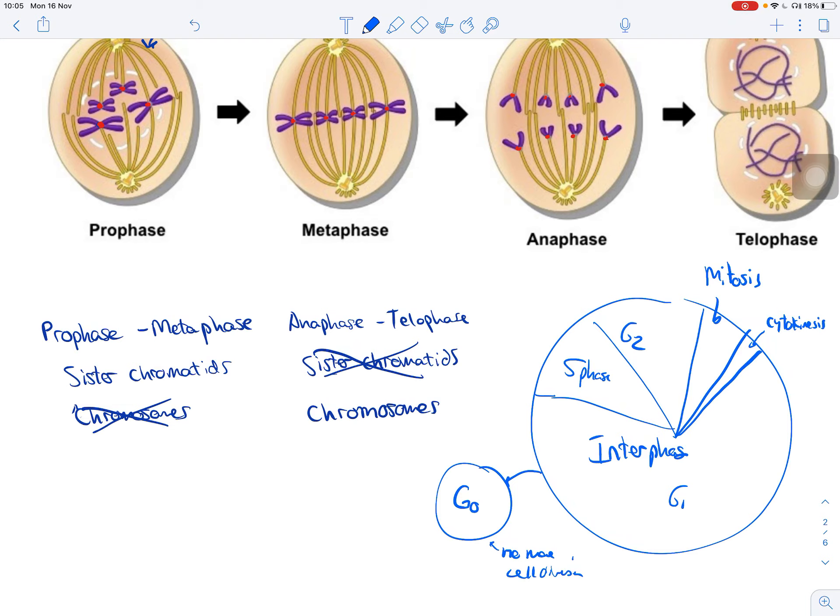So when you damage your spinal cord, you actually lose function because those cells can't be replaced when they're damaged. And there's a lot of research looking at how to get cells from G0 back into the cell cycle so they can divide and things like that.